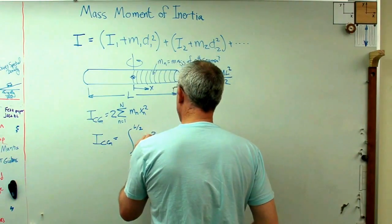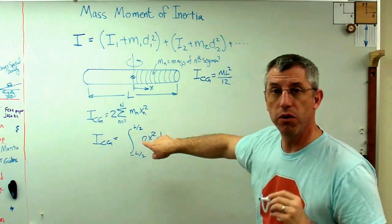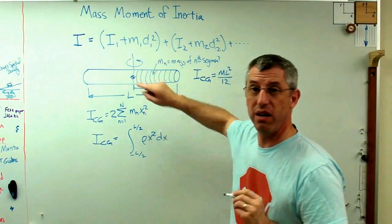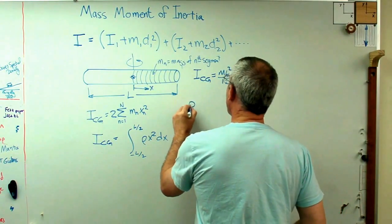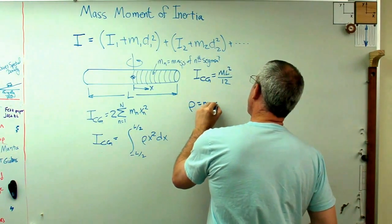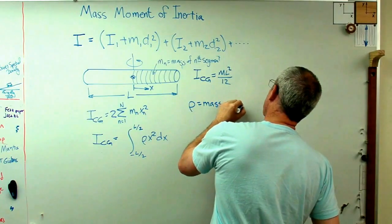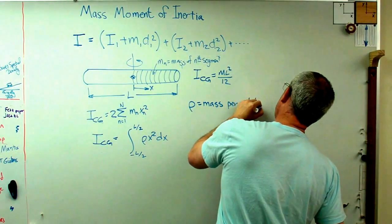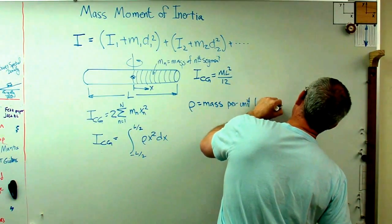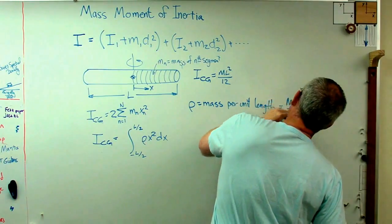Rho x squared dx. And the only thing you haven't seen before is rho. Rho takes the place of that individual mass. Rho is the mass per unit length. So that's going to be M over L.